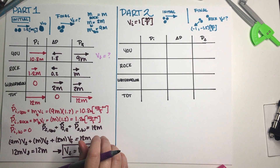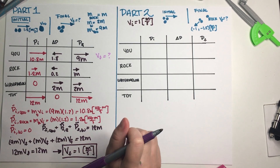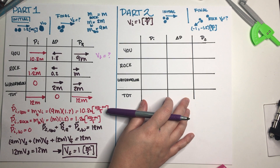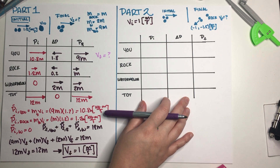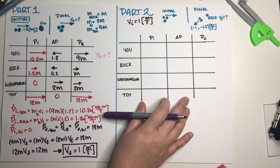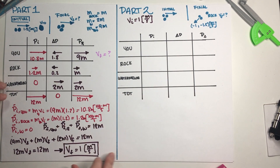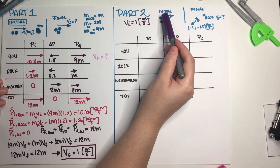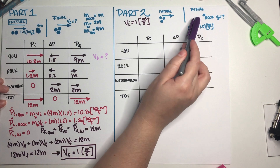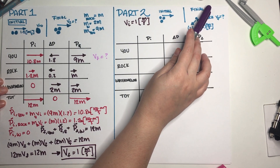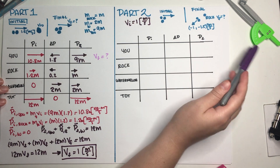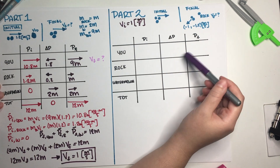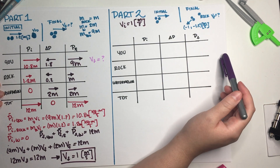Now let's read part two. Once you have the watermelon, you throw the rock. After which you're traveling while holding the watermelon towards the spaceship with a velocity of negative 1 (x) and negative 1.5 (y). Use a momentum chart to calculate the speed of the rock after you threw it and the angle its velocity makes with the x-axis. We don't know the velocity or momentum of the rock, so we'll use the momentum chart to figure it out.